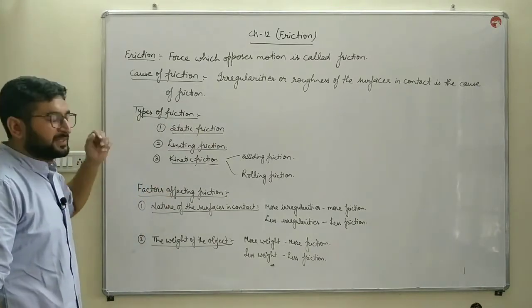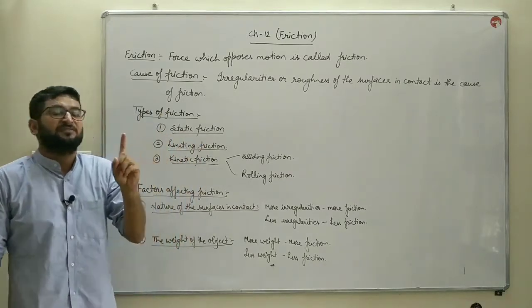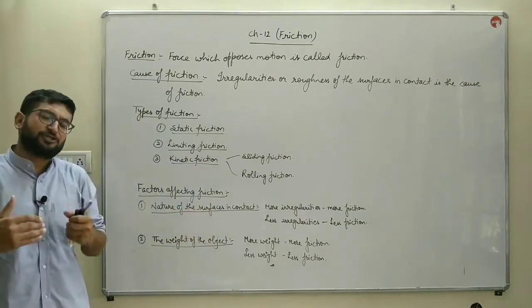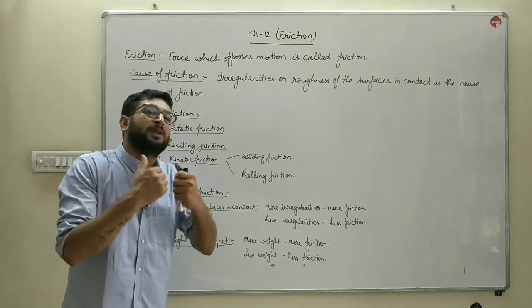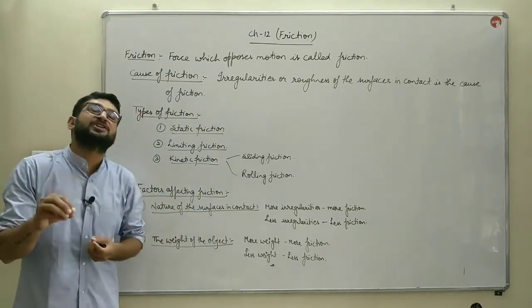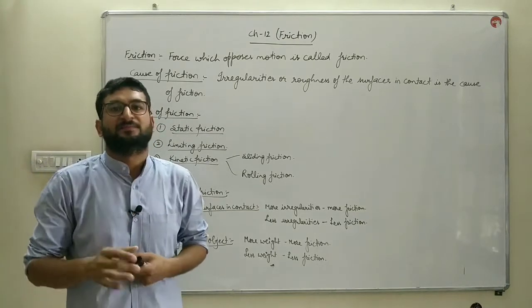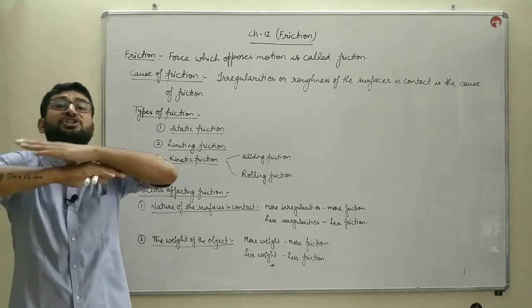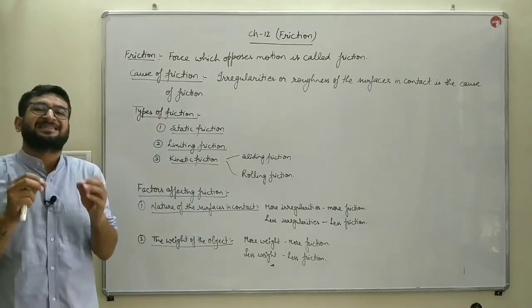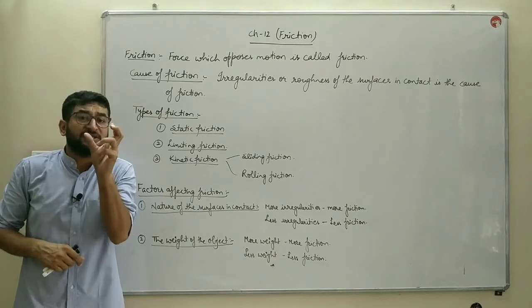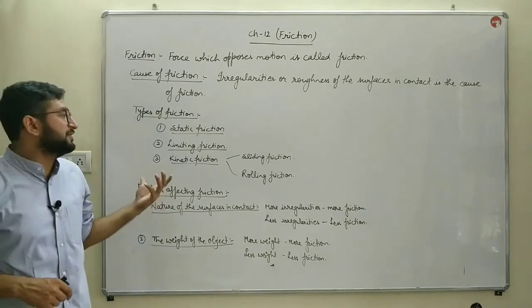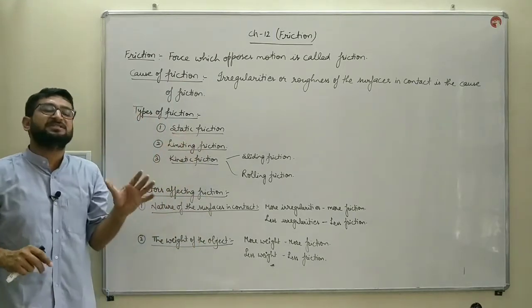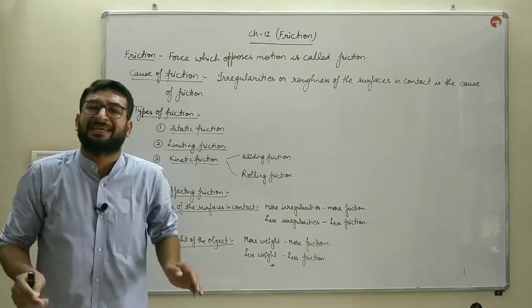Next, the types of friction. There are in total three types of friction. The first one is static friction — the frictional force which comes into play when one object is placed over another and neither of them is moving. When two objects are in direct contact with each other, the frictional force between them is known as static friction. The key point is that the objects must be at rest; the position must be static, meaning the objects do not possess any kind of motion.